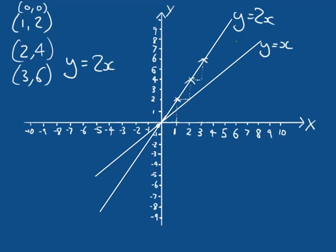We can check this: choosing X equals 4, we find where that touches the line — the Y value is 8. So when X equals 4, Y equals 8. If we put 4 into our equation, two times four is eight. Indeed, our Y coordinate is eight.